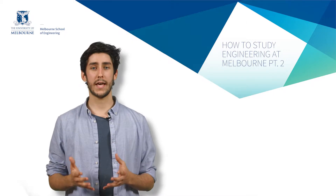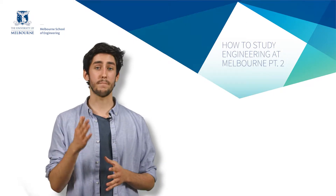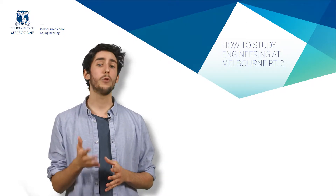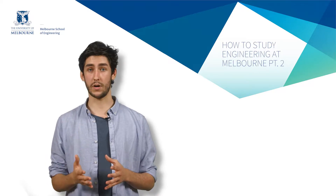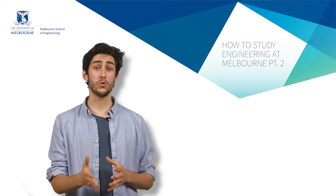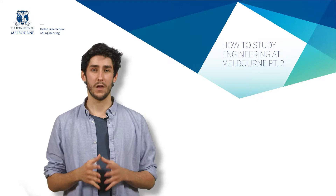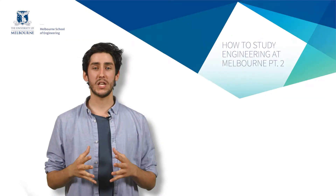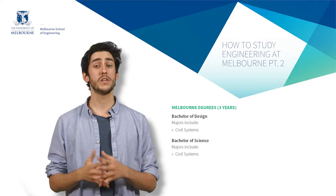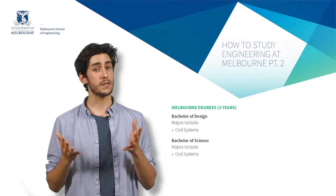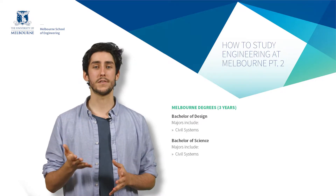The discipline you intend to specialise in during the Master of Engineering will help determine which pathway degree and major you choose in your bachelor degree. For instance, for civil engineering you would choose the civil systems major, which is available in either the Bachelor of Design or the Bachelor of Science.